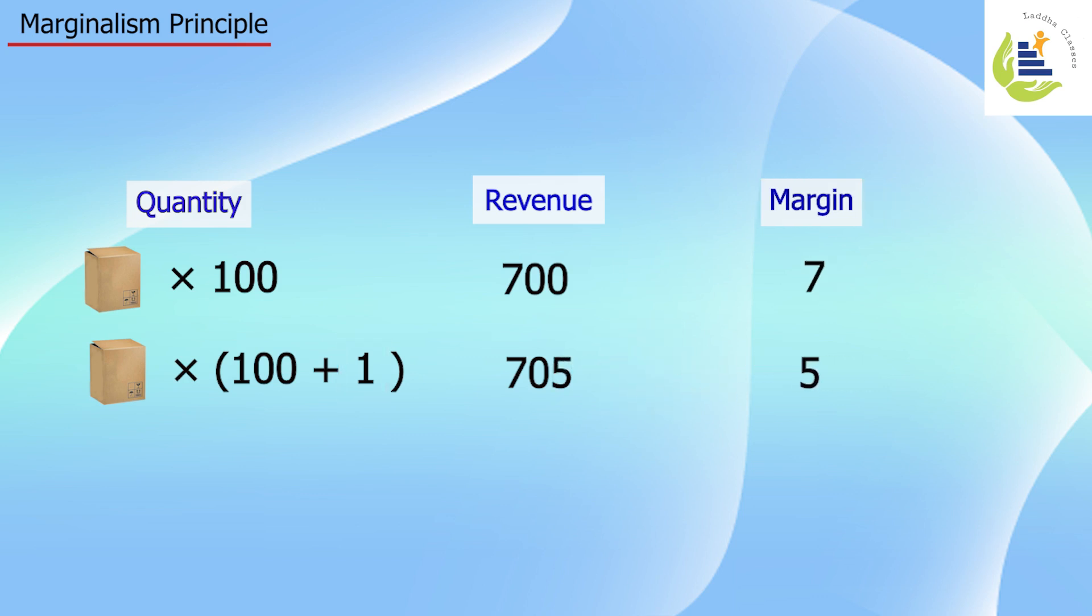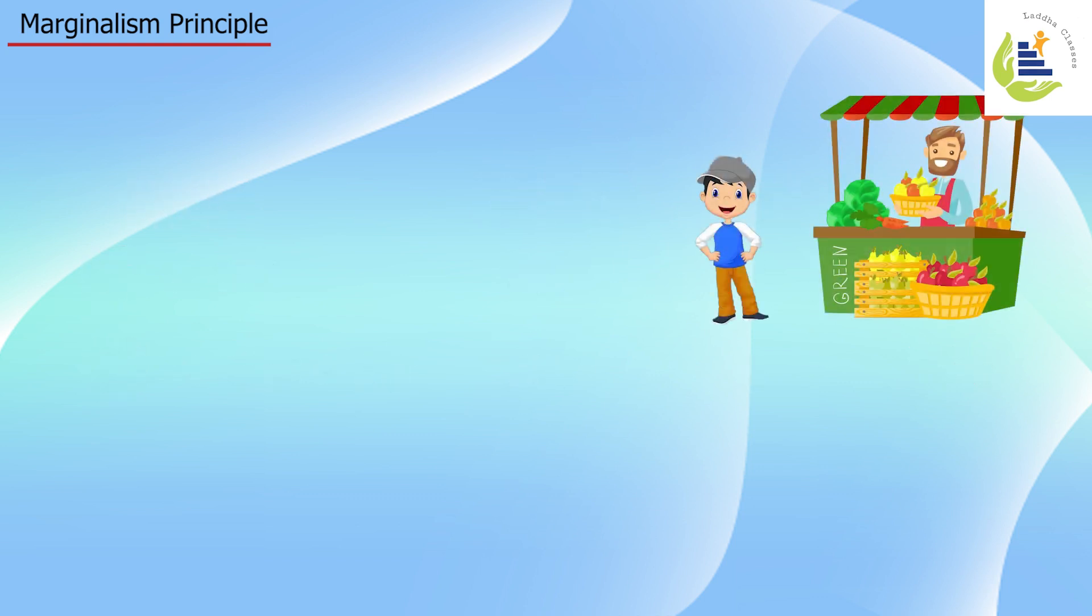Many economic decisions: shall I go for the next sale? Because per unit sales revenue is reducing, is it worthwhile to go ahead or not? That decision can be derived by the manufacturer. Similarly, the buyer also decides on a similar concept. If he is getting four units at 100 rupees and the fifth unit at 120 rupees, that additional fifth unit costs him 20 rupees.